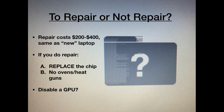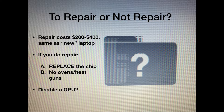If you do go with repair, make sure the person actually replaces the chip. Make sure they're not using ovens or heat guns or being vague about what their process is, because ovens and heat guns are very destructive, very reckless, and very indiscriminate — they'll melt other parts of the board that don't need work. Even if it does seem to fix the issue, the issue will come back in two weeks. Make sure you're dealing with someone who's transparent about their process and that they're actually replacing the chip.